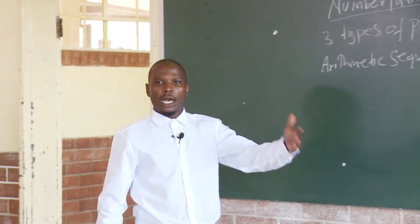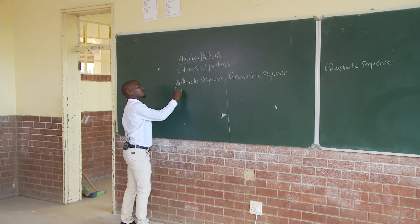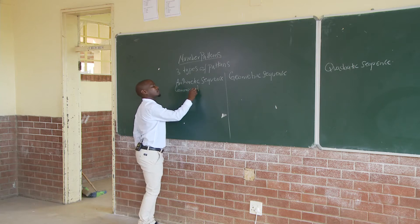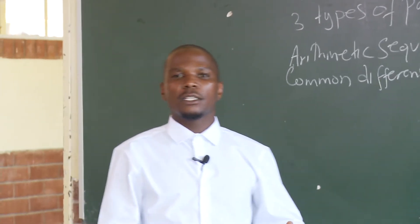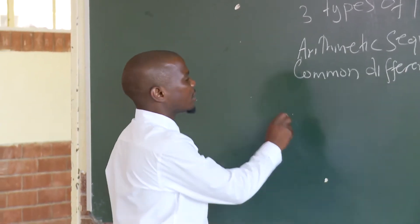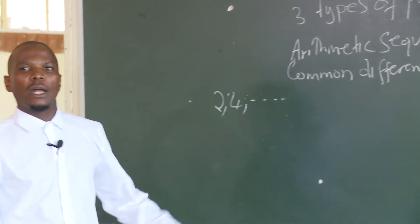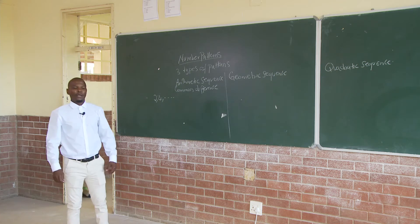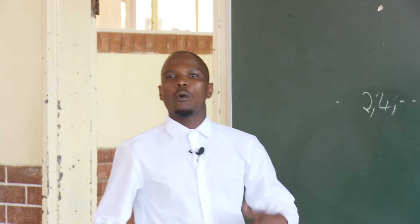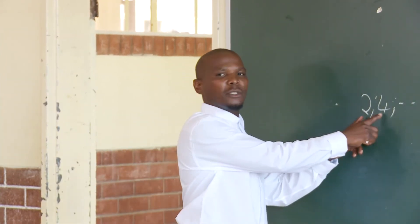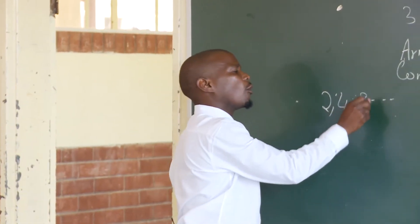The arithmetic sequence has a common difference. After finding a common difference, you can see the pattern. What type of pattern is this one? You can identify it as arithmetic. You can only see the pattern if you have three terms or more.